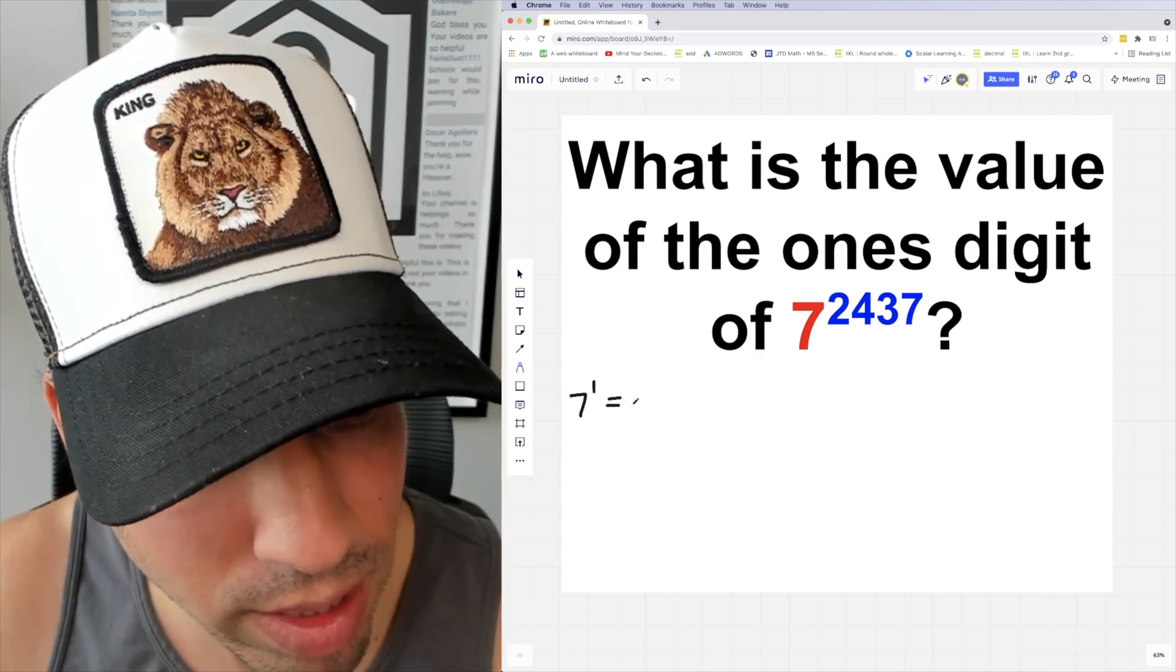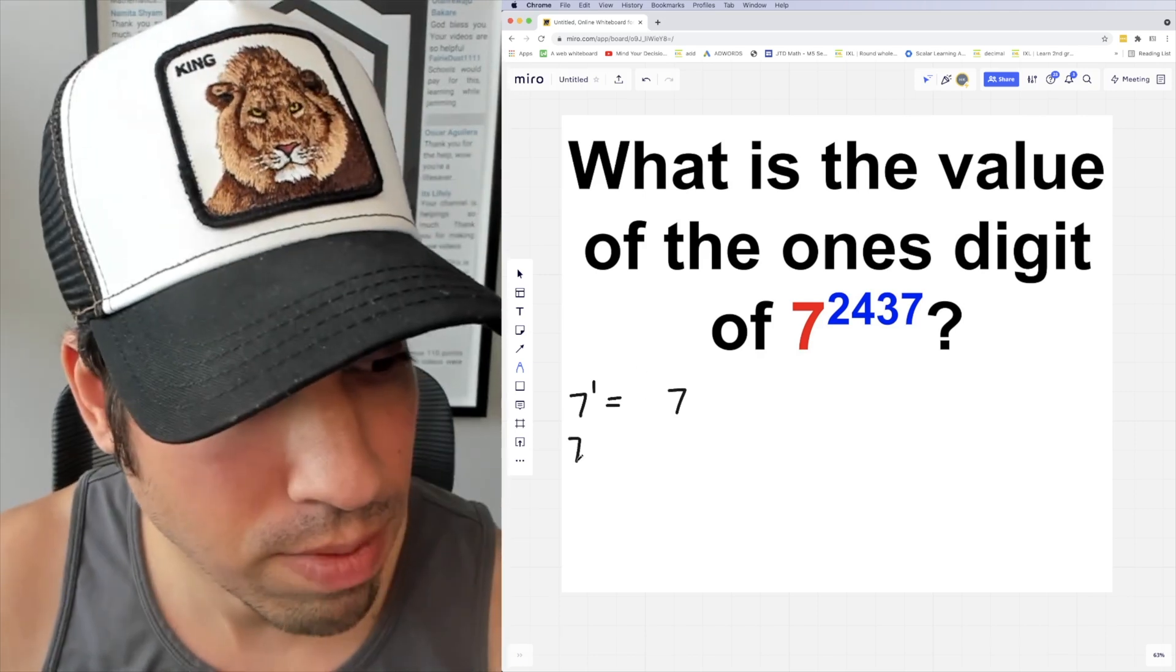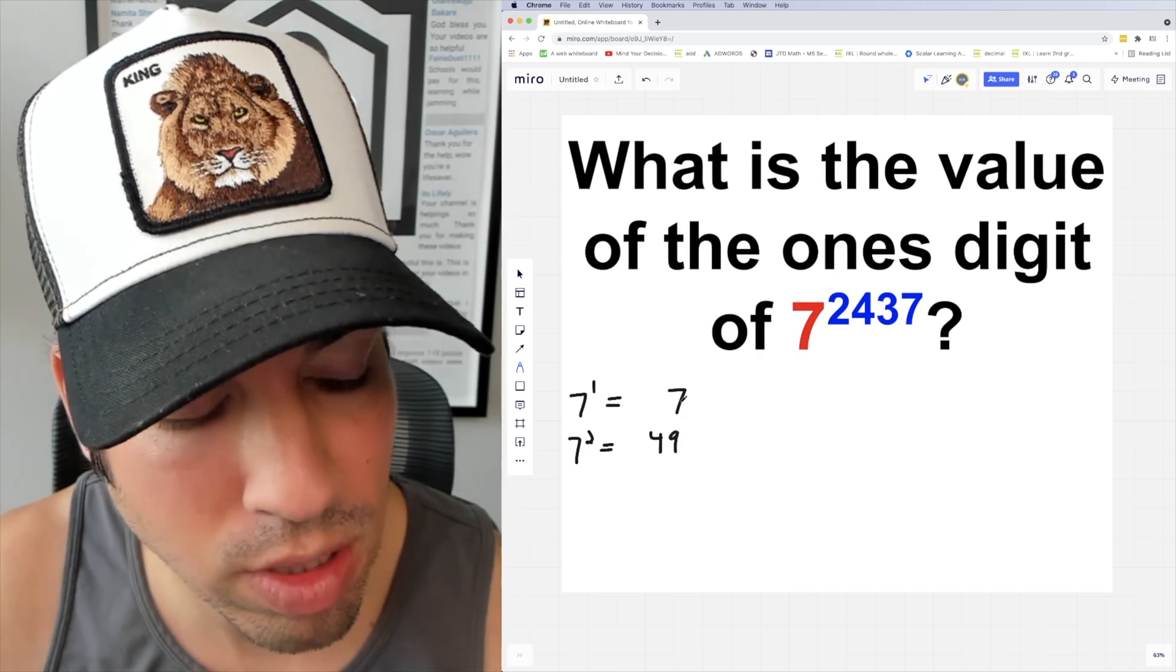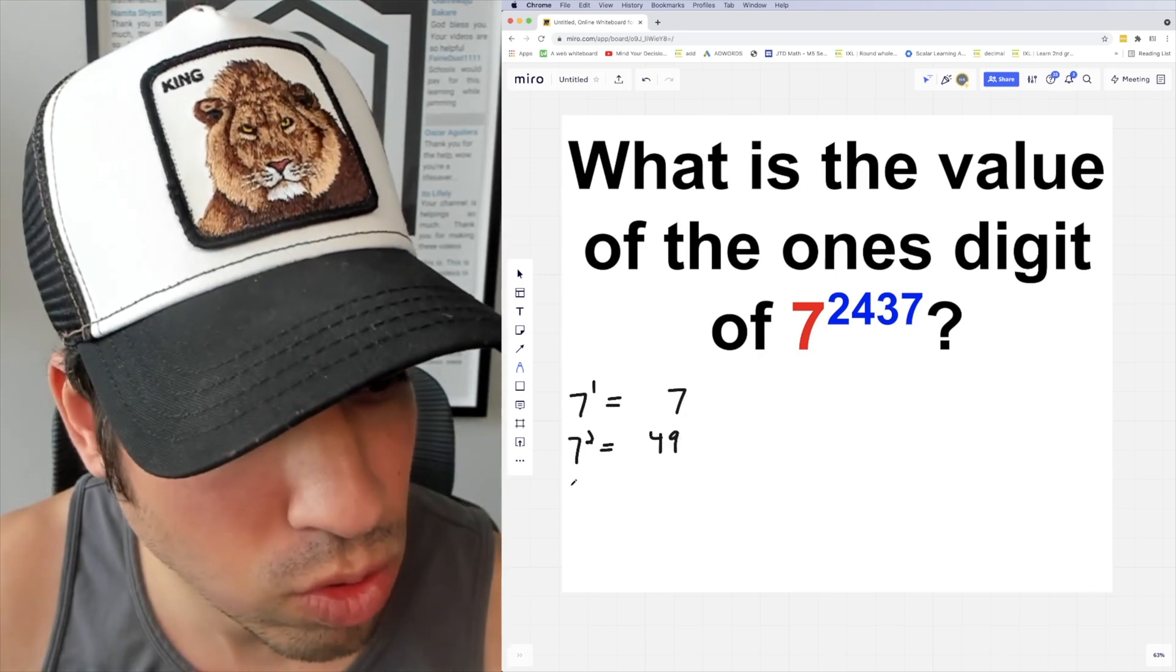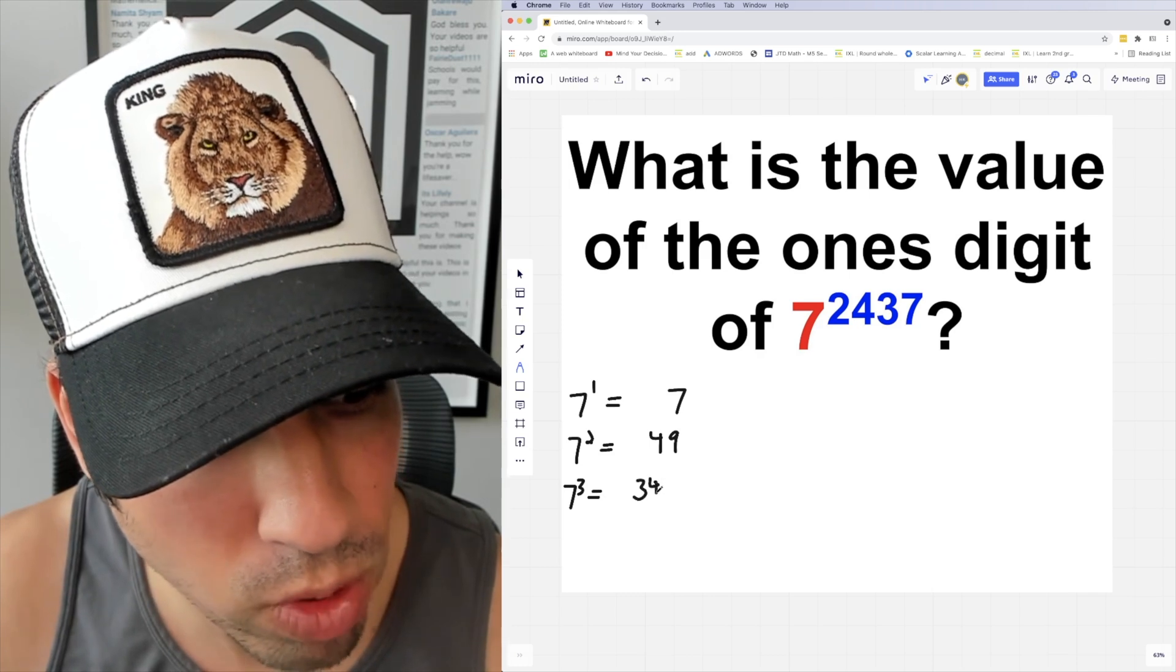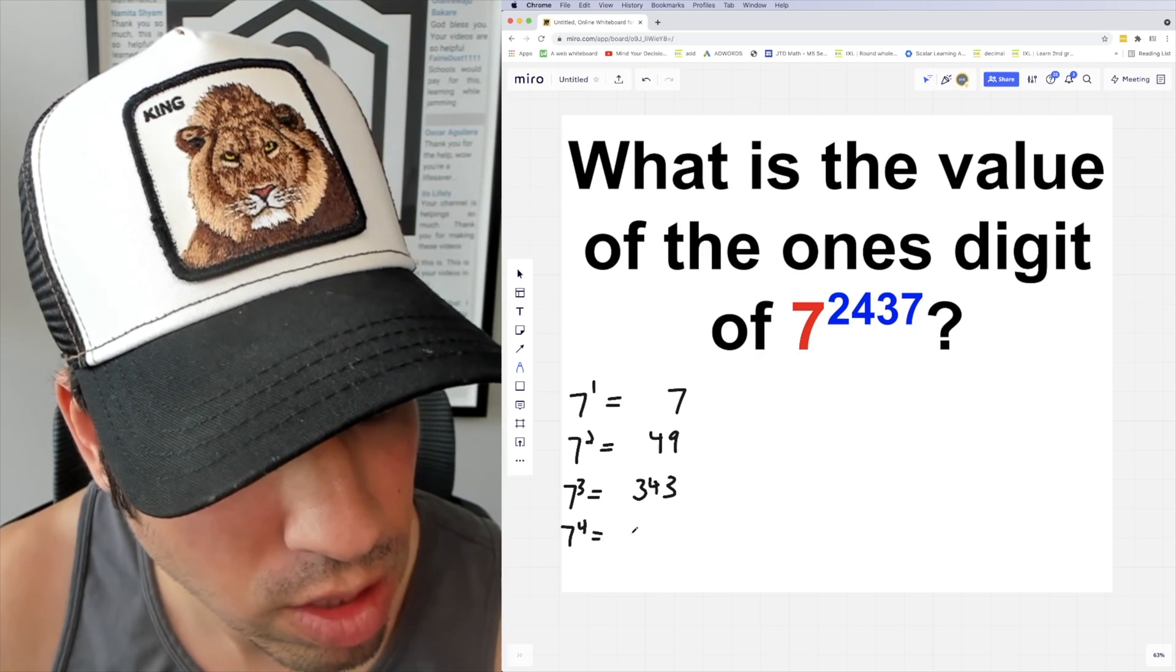First, 7 to the first power is 7, and remember we only care about the ones digit. 7 to the second power is of course 49, so it's gone from 7 to 9. Next, 7 cubed is 343. Next, 7 to the fourth power is 2401.